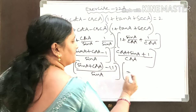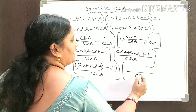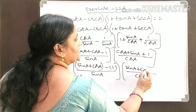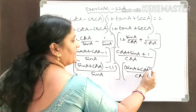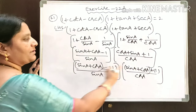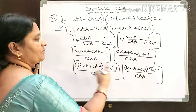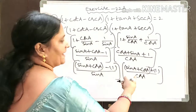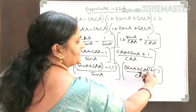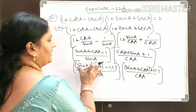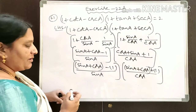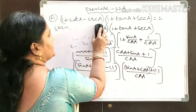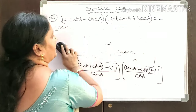Coming to the second bracket, cosA is the denominator, and we write the numerator as sinA + cosA + 1. Observing the two numerators: the first is (sinA + cosA - 1) and the second is (sinA + cosA + 1). We can apply the algebra formula A + B into A - B.